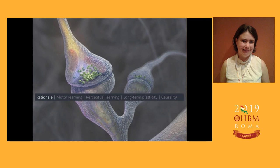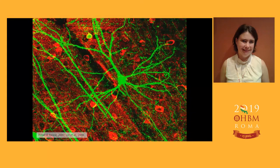So, a little backtrack. Why on earth would we begin to think that GABA changes might be important in plasticity? There are an absolute ton of papers I could start with, but I've edited it down for the interest of time, and I'm going to start with just one.